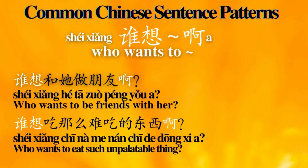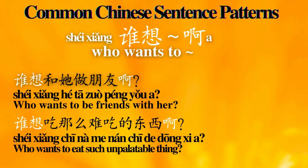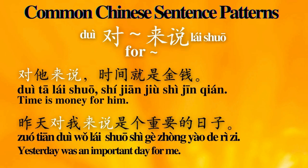Number 7: 谁想. Sentence examples: 谁想和她做朋友啊？ Who wants to be friends with her? 谁想吃那么难吃的东西啊？ Who wants to eat such an unpalatable thing?